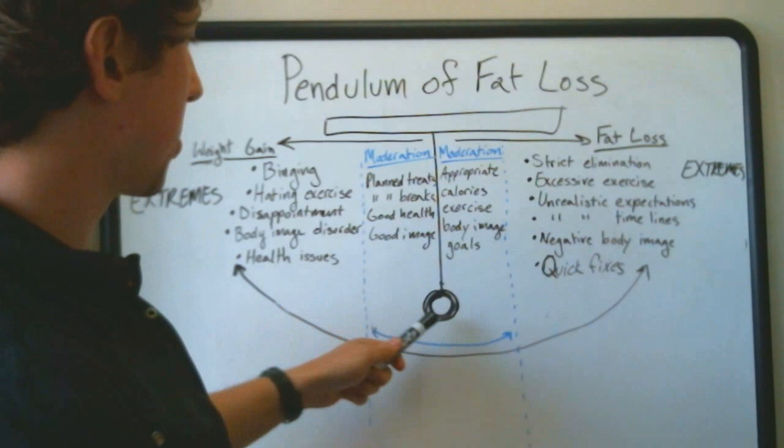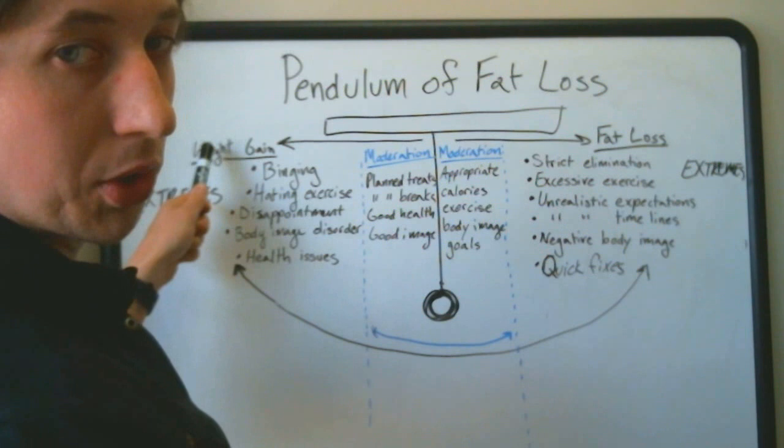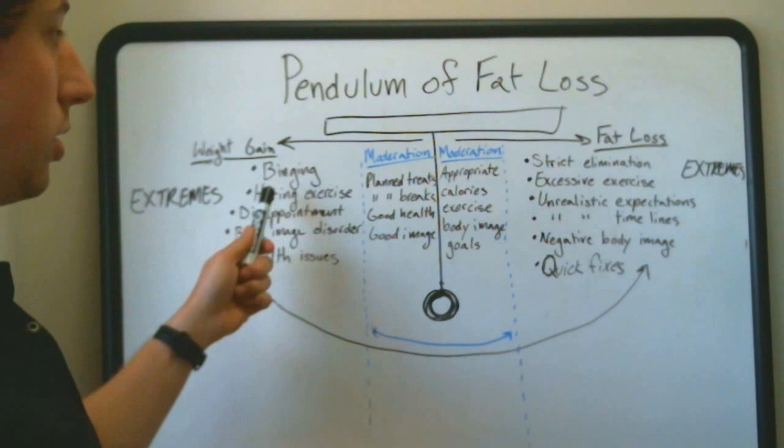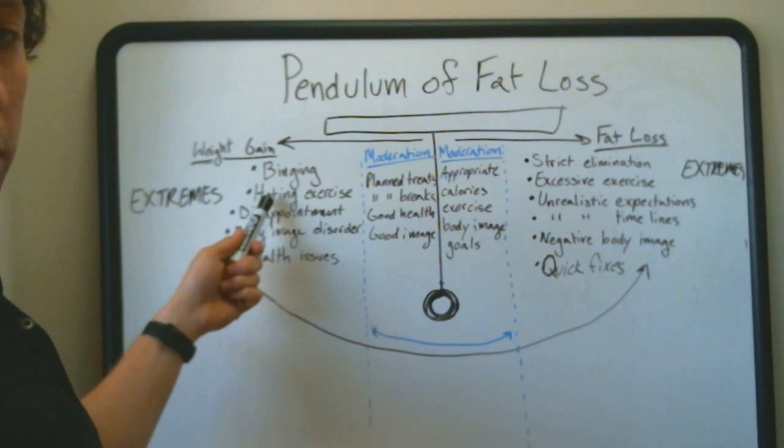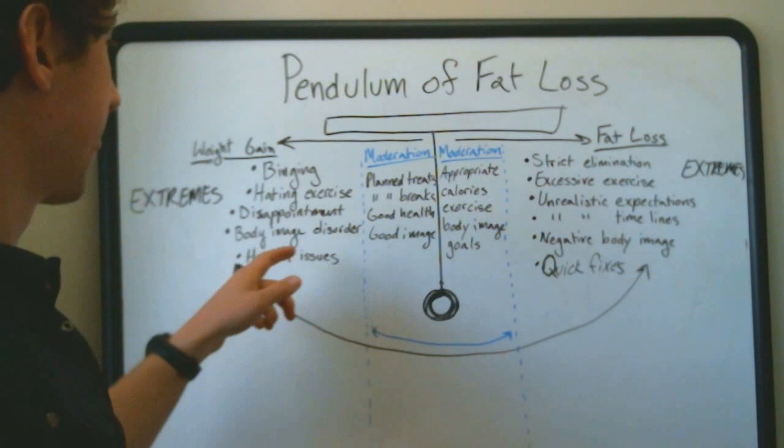So what happens when the pendulum swings one way to an extreme on a fat loss? Well, we get over to a weight gain. An extreme over here would be if we strictly eliminate, that's going to lead to a binge. If we exercise excessively, that's going to probably lead to either hating exercise, or a long-term period of sedentary activity.